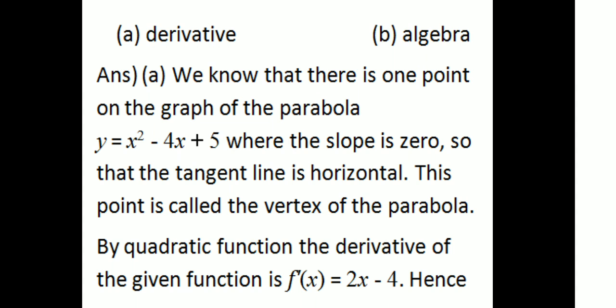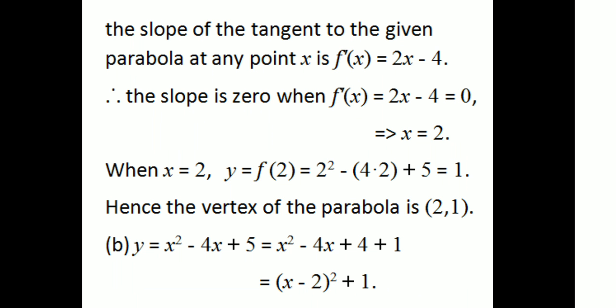This point is called the vertex of the parabola. By the quadratic function rule, the derivative of the given function f of x equals x squared minus 4x plus 5 is f dash of x equals 2x minus 4. Now the quadratic function rule gives derivation of f of x equal to 2x minus 4. Hence the slope of the tangent to the given parabola at any point x is f dash of x equals 2x minus 4.